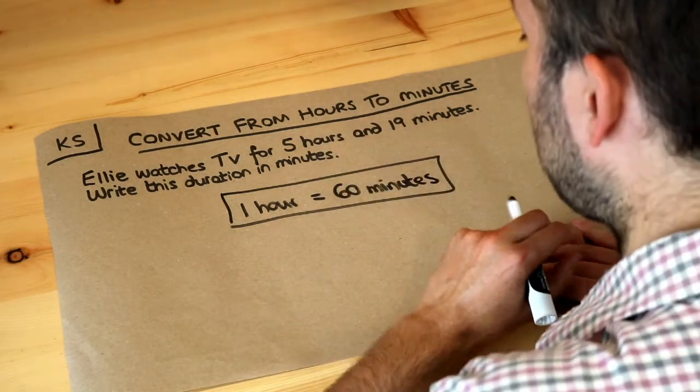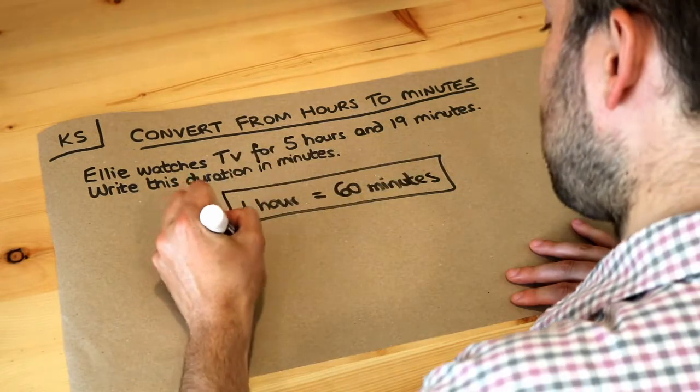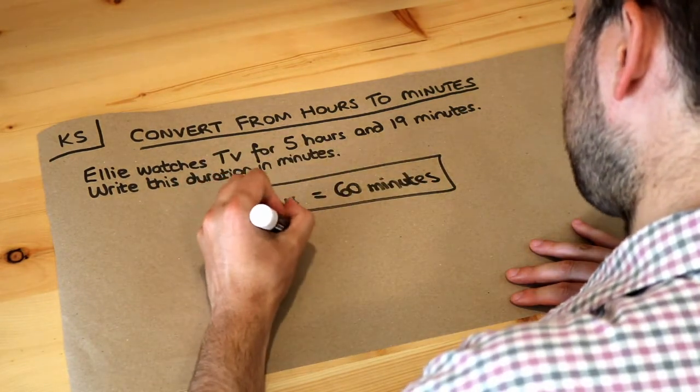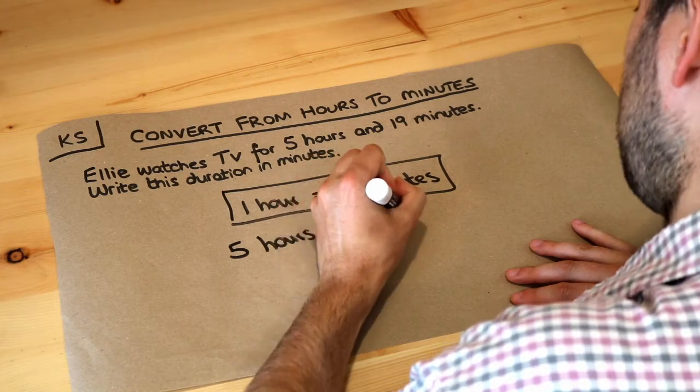If one hour has passed, 60 minutes has passed. So if we write down the question we've got five hours plus 19 minutes. I'm just going to write mins for short.